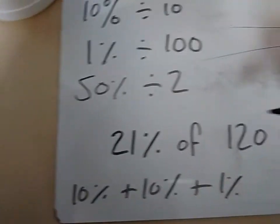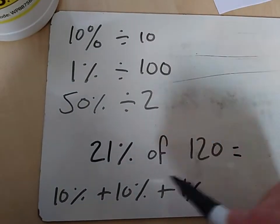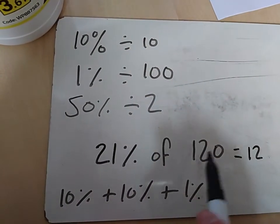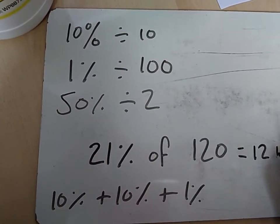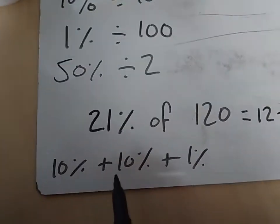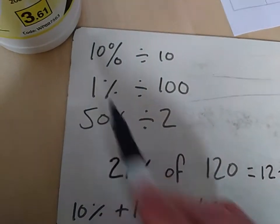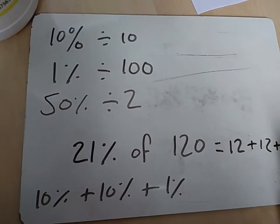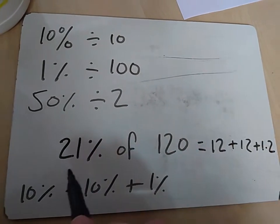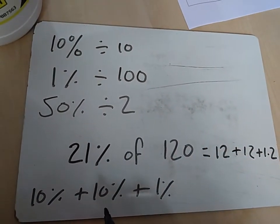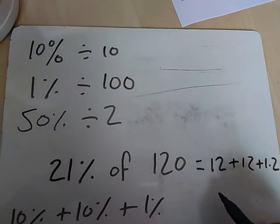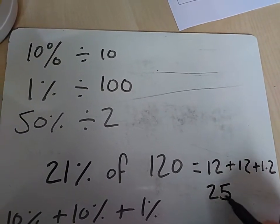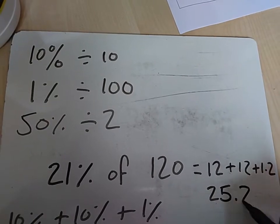And like I said before, 10% is divided by 10, so 10% is 12. 120 divided by 10. And I'm going to do that again. And then 1% is divided by 100. So 21% is 10% plus 10% plus 1%. So it's 12 plus 12 plus 1.2, which is 25.2.